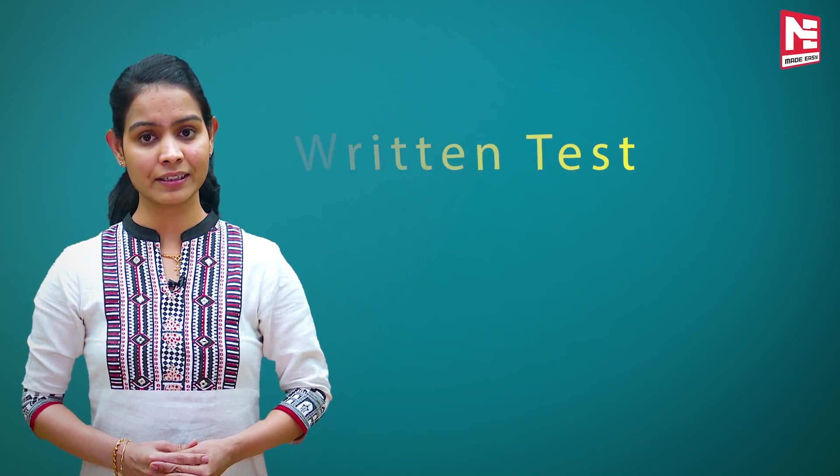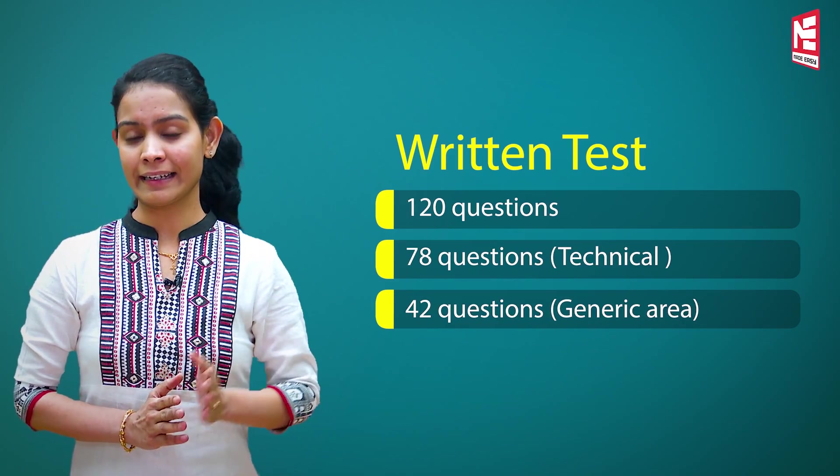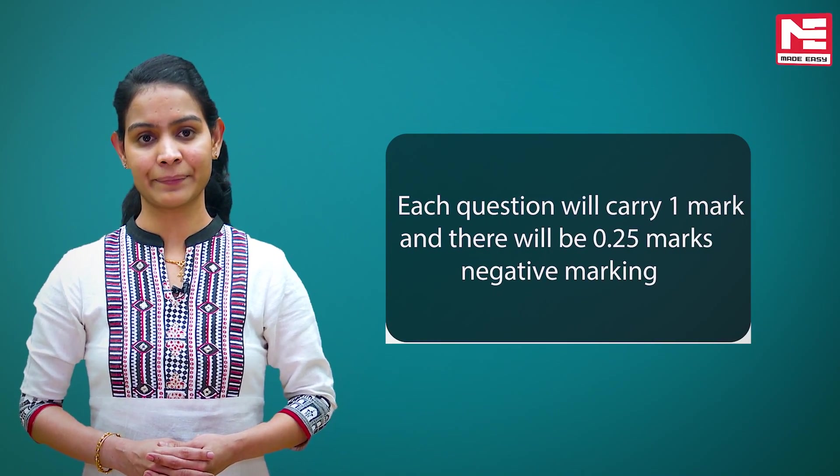Selection will be done through a written test and interview for Scientist B post, and only through written test for Scientific Technical Assistant A post. The written test will have 120 objective type questions — 78 from technical area and 42 from generic area covering logical reasoning, analytical reasoning, quantitative and qualitative abilities, and general aptitude. Each question carries one mark with a negative marking of 0.25 marks. Minimum qualifying percentage is 50% for General and EWS candidates, 40% for OBC, and 30% for SC/ST/PWD categories.